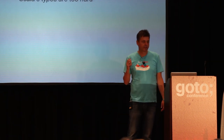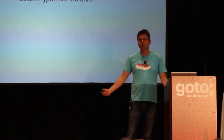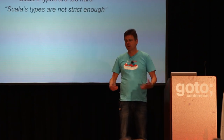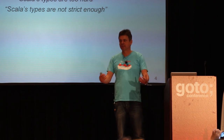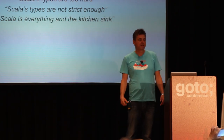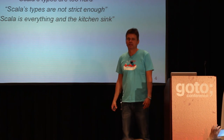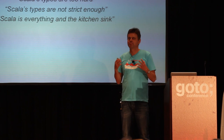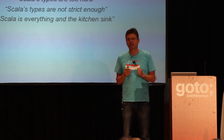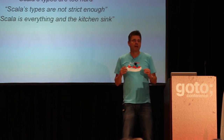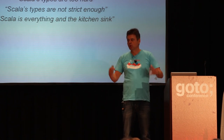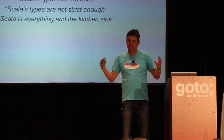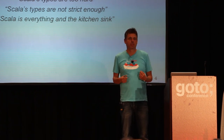External complaints include: Scala is too academic, or alternatively, Scala is sold out to industry. Scala's types are too hard — that's what you often hear. But another subset of the community says Scala's types are not strict enough; we need more types, stronger types. And a lot of people say Scala is everything and the kitchen sink. That last point is the one that gets me most upset, because when I created Scala, that's precisely the opposite of what I wanted to create. I wanted to create something simple.